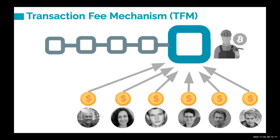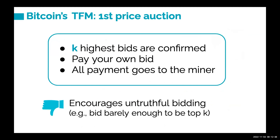In blockchain, the block space is a scarce resource, and there can be many users who want their transaction confirmed in this limited space. That's why we need to run an auction to decide whose transactions to collect. If you look at today's mechanisms, Bitcoin runs a very simple first-price auction: everyone bids, we take the K highest bids where K is the block size, and everyone pays their own bid. All payment goes to the miner.